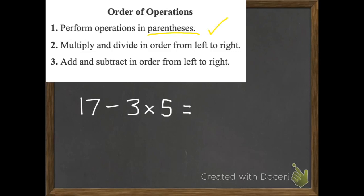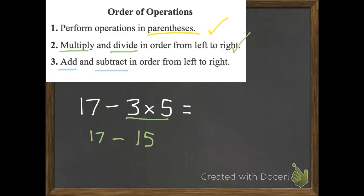Step two: multiply and divide. We do have something to multiply — three times five. So what is three times five? It is 15. Is there anything else to multiply or divide? Nope. So we move on to step three, which is add and subtract. What is 17 subtract 15? It's two.